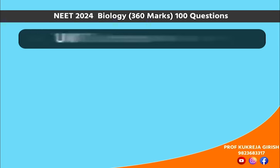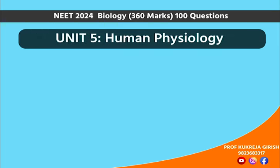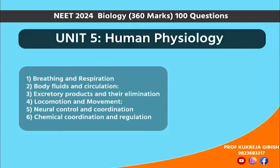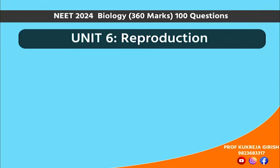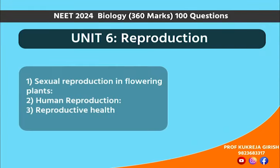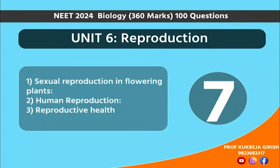Unit 5, human physiology — around 13 questions. Unit 6, the reproduction — plant and animal reproduction — 7 questions.